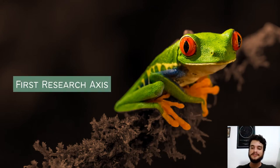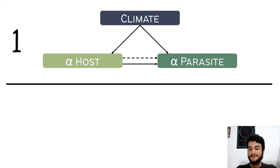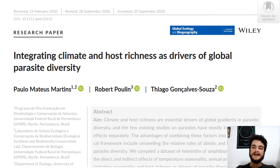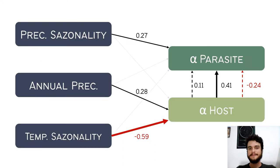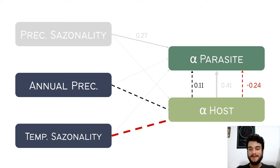Back to our first research axis, focused on direct and indirect relationships. It is already published in Global Ecology and Biogeography, so go check it out or email me. For this chapter, we used Piecewise SEM to integrate those direct and indirect effects of climate and host richness. We found that annual precipitation and temperature seasonality have an effect on parasite alpha diversity that is mediated by their effects on hosts.